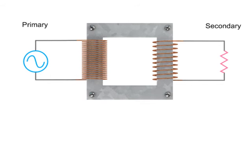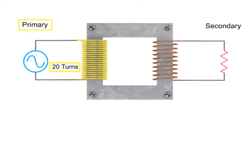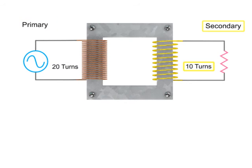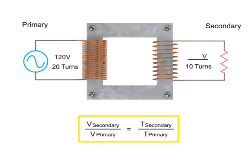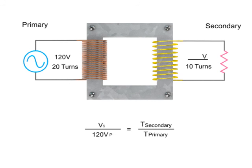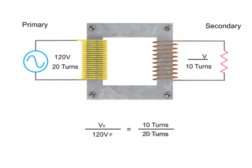In this example, we have 20 turns on the primary coil and 10 turns on the secondary coil. To determine the decrease in voltage occurring in this step down transformer, we can use a simple ratio formula. This formula simply states that the secondary voltage to primary voltage ratio is the same as the secondary coil to primary coil turn ratio.